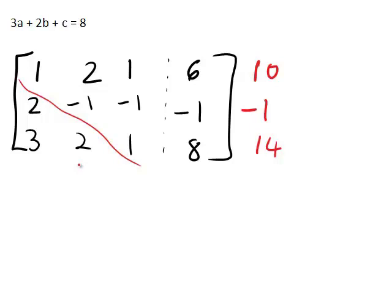Usually the best way to start is to perform row operations on the appropriate elements of the first column that we want to make zero, by adding or subtracting multiples of the first row. There are three types of row operations in Gaussian elimination: one is to swap two rows; another is to multiply a given row through by a non-zero constant; and the third is to add or subtract a multiple of one row from another.